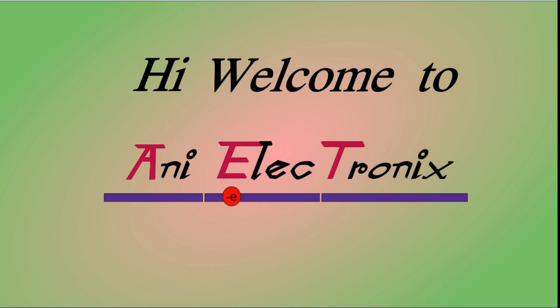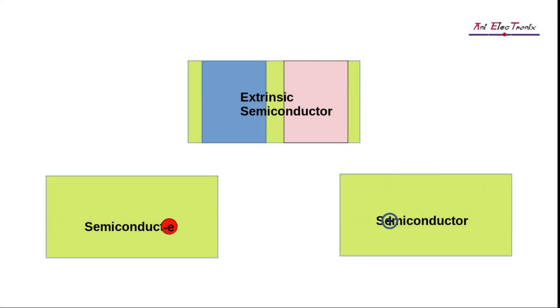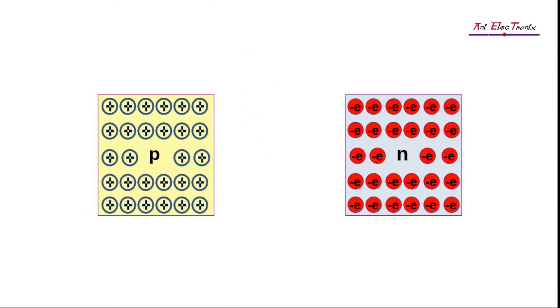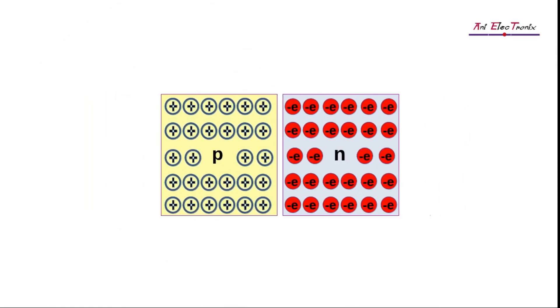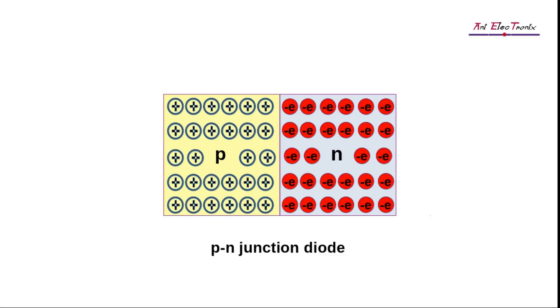Hello, welcome to Ani Electronics. In our previous video, we learned what an extrinsic semiconductor is and how to increase its conductivity. We will explore the unbiased P-N junction diode in this episode and the information it contains.